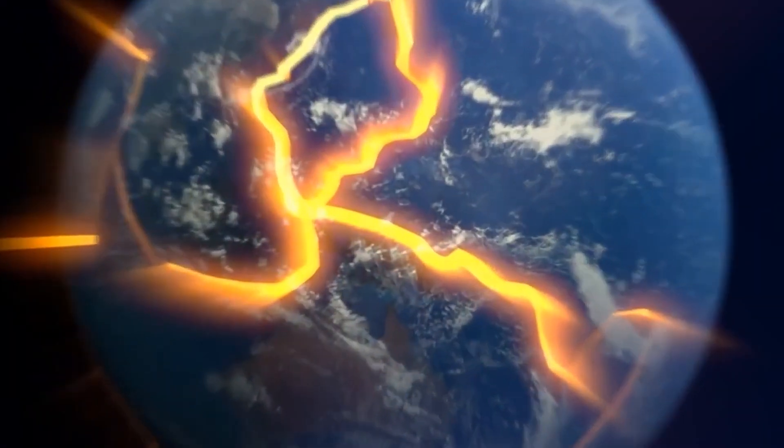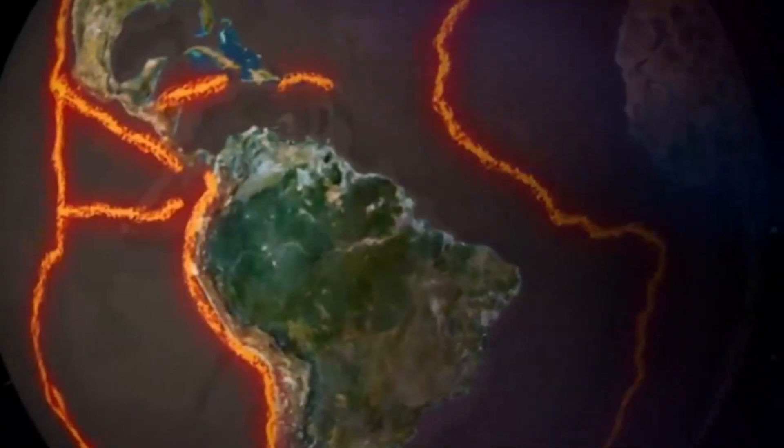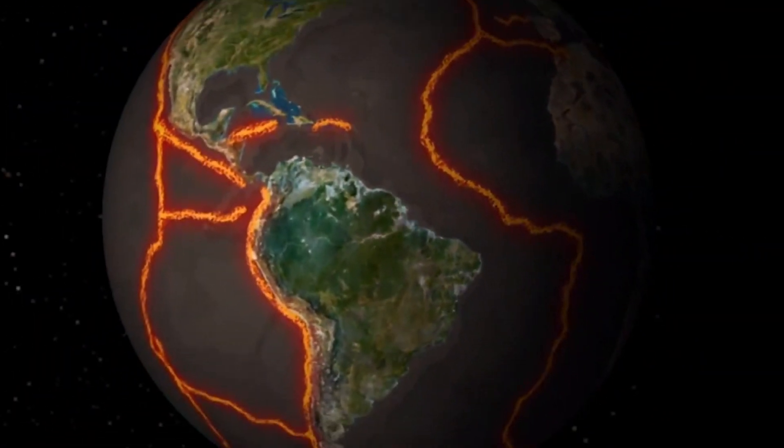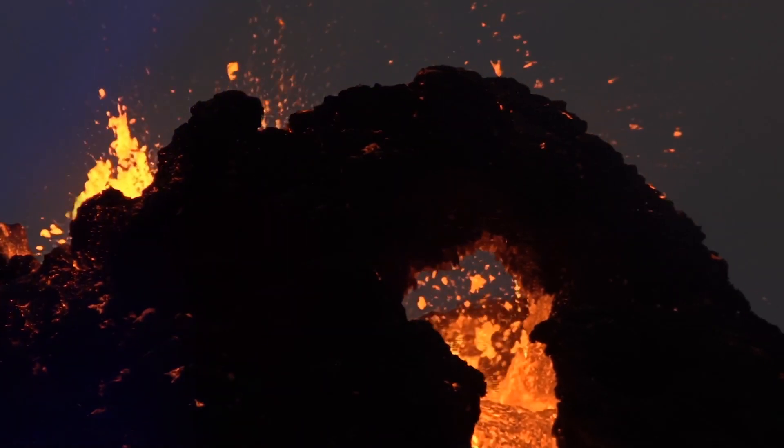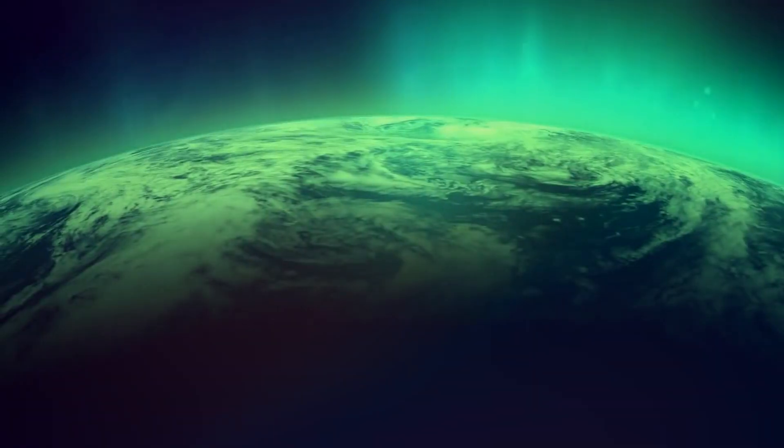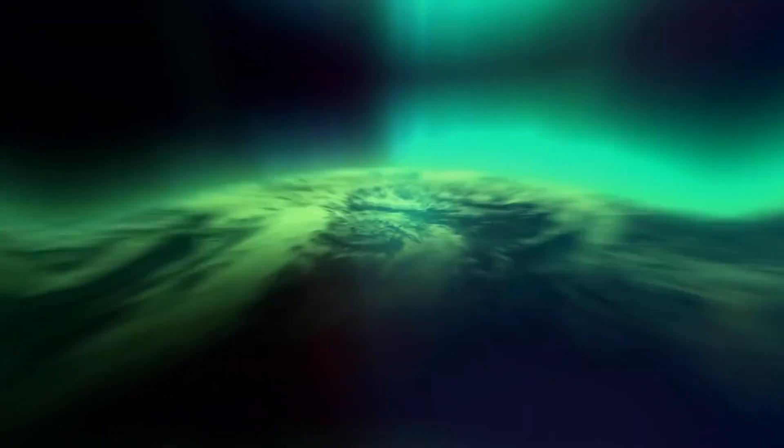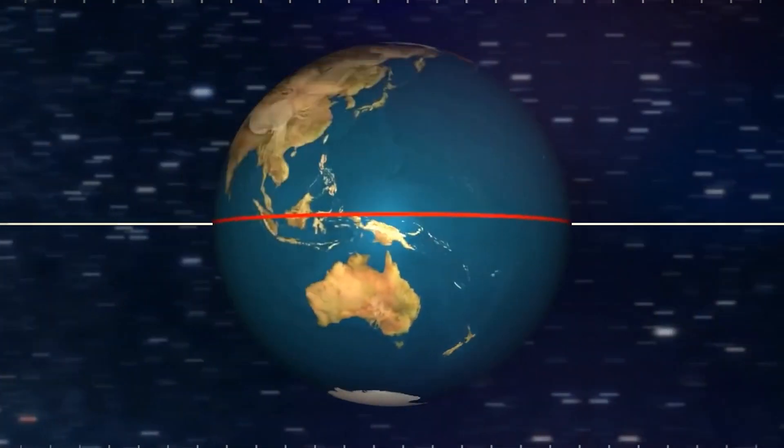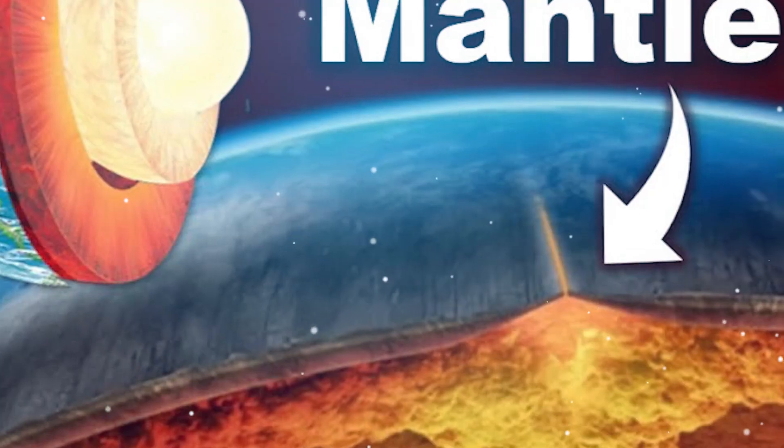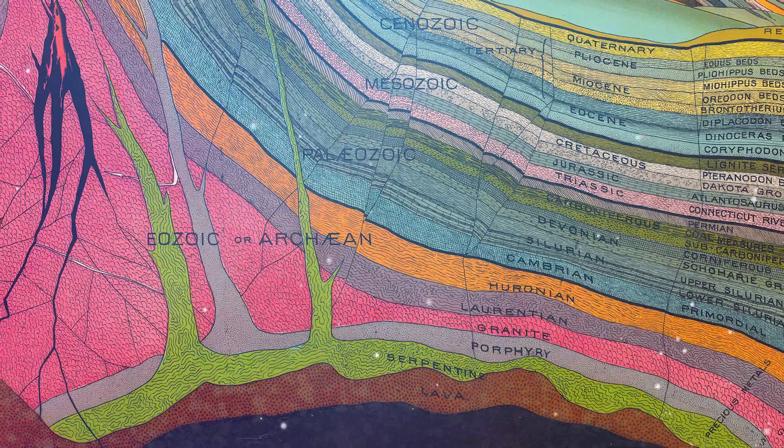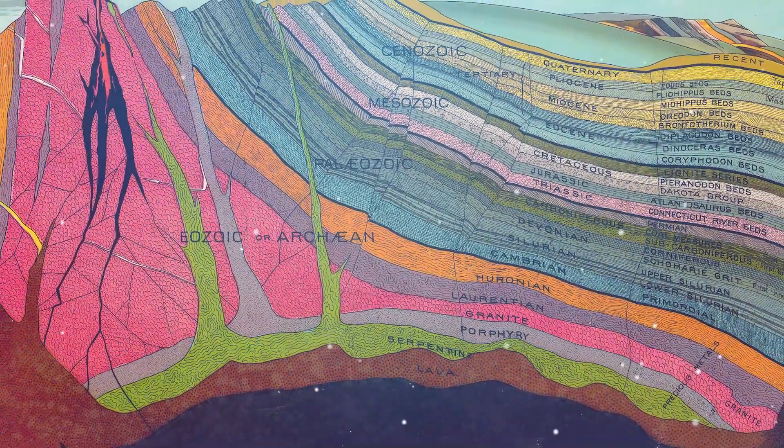Now the mantle is responsible for some pretty cool things. As the mantle's rock flows, it pushes and pulls those tectonic plates, creating earthquakes, volcanic eruptions, and shaping the Earth's surface over millions of years. While the crust is more like Earth's outer skin, the mantle is the engine beneath, driving the geological action.